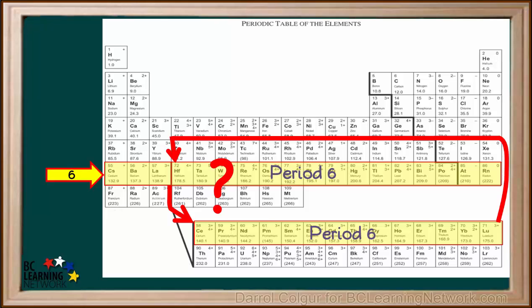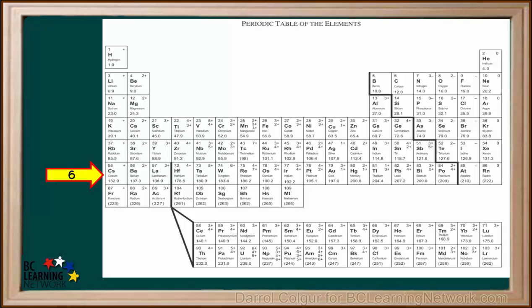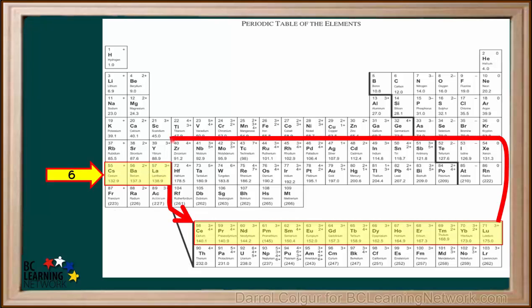You may be wondering why Period 6 elements are arranged in this strange way. This will be explained to you in future Chemistry courses. At this point, just remember that Period 6 contains elements 55 to 86.